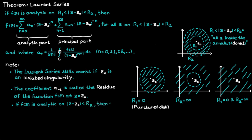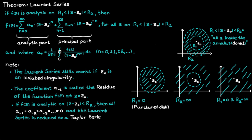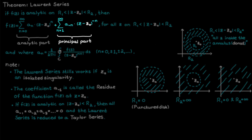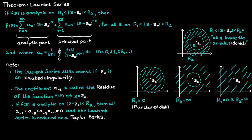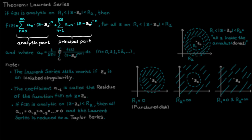Note that if we find that a function is analytic on the whole disk, then all the coefficients for the negative powers of c minus c-naught will be equal to zero, and that means the Laurent series reduces to a Taylor series. This comes from the fact that the only thing separating a Taylor series from a Laurent series is that a Laurent series also contains the principal part.